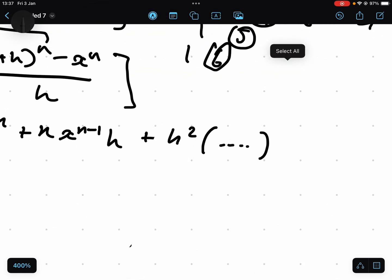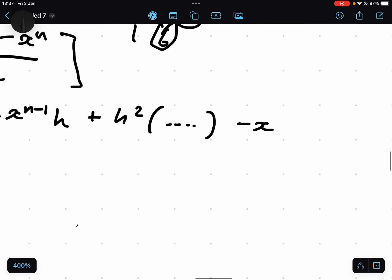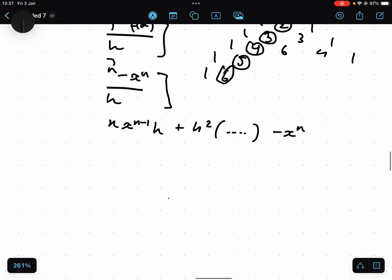It's going to be h, h squared, h cubed, all the way to h to the power of n. And then remember, you've got minus x to the n. All over h.